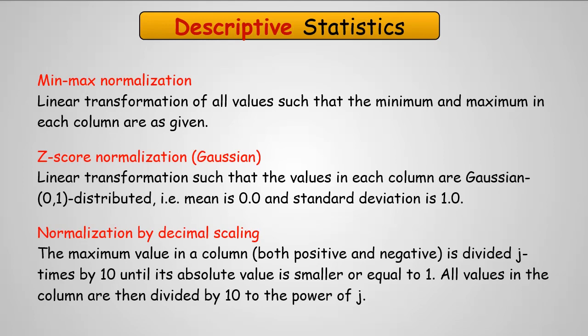Finally, there's normalization by decimal scaling. It's kind of a brute force method where the maximum value, whether it's positive or negative, is divided by J times by 10, until its absolute value is smaller than or equal to 1. Then all values of that column are divided by 10 to the power of J.